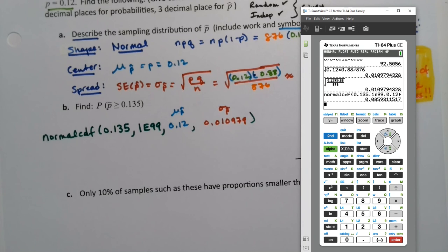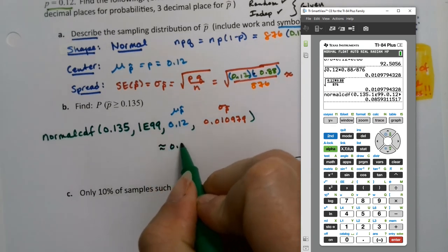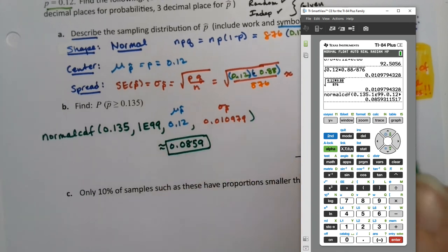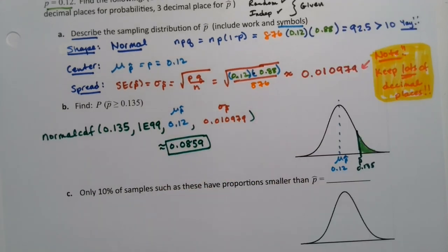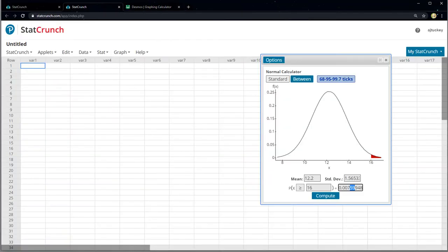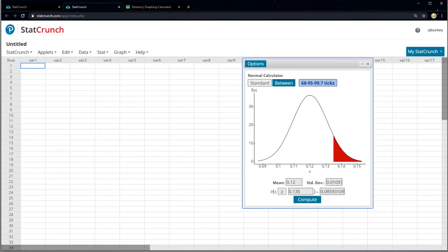And of course, if you prefer StatCrunch, which actually I prefer StatCrunch, we would go to StatCrunch. We would type in 0.12, 0.010979, and we want the probability that's greater than or equal to 0.135. Enter, and there it is. And it noticed the picture—you can always adjust your picture a little bit if you did it in StatCrunch, you can make it match this a little bit better. All right, wonderful.